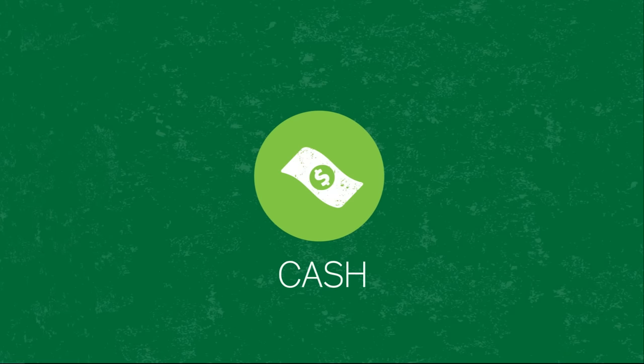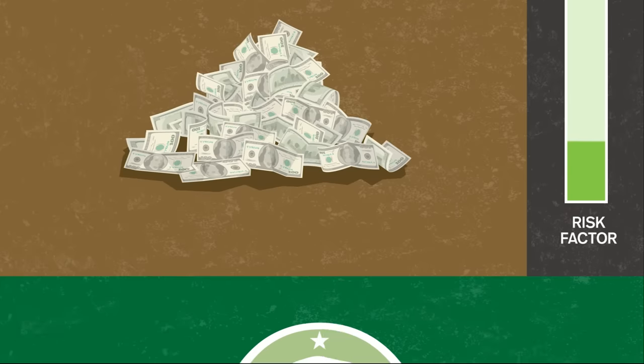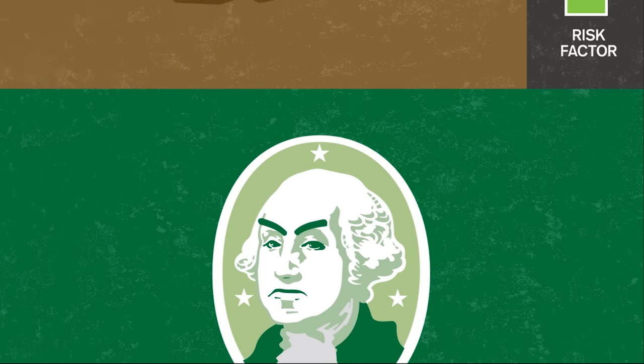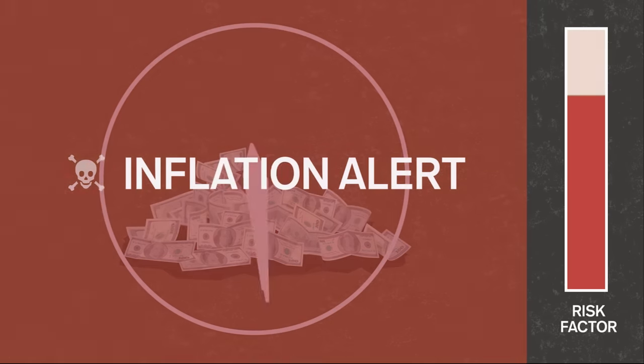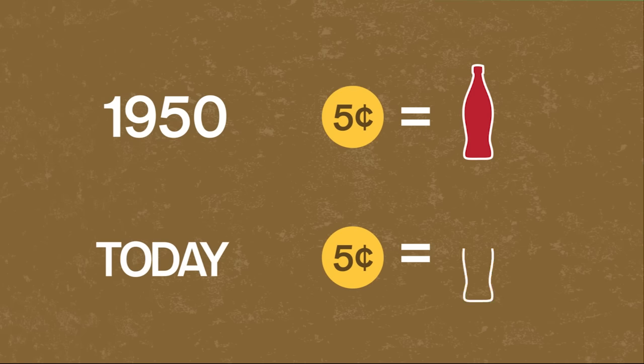Cash is, well, cash. In a 401k, it's usually available as a money market or stable value fund. Unlike other assets, there's little risk that your money will lose value. But that doesn't mean there's no risk at all. If you hold too much cash, you are at risk that inflation will leave your money worth less compared to everything else. For example, in 1950, a nickel would buy you a coke. But if you saved that nickel until today, you wouldn't have enough to buy that same coke. Cash loses value over time.